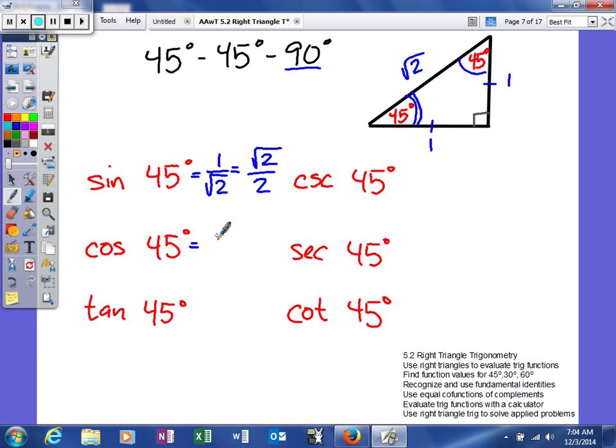Alright, fantastic. Cosine of your angle, 45 degrees, is going to be the adjacent side. Square root of 2. And when you rationalize it, you get the square root of 2 over 2.